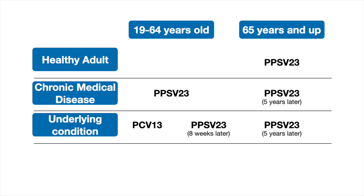If a patient has an underlying condition like a cochlear implant or cerebrospinal fluid leak, the recommendation was to administer Prevnar-13 between 19 to 64 years of age, followed by Pneumovax at least eight weeks later. Then at 65 and up, a second dose of Pneumovax would be administered, at least five years apart from the last Pneumovax dose.